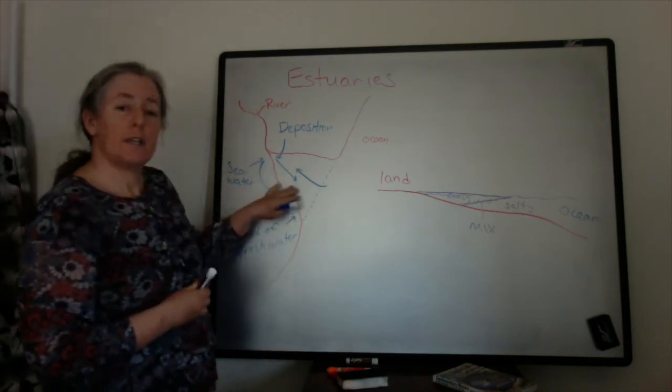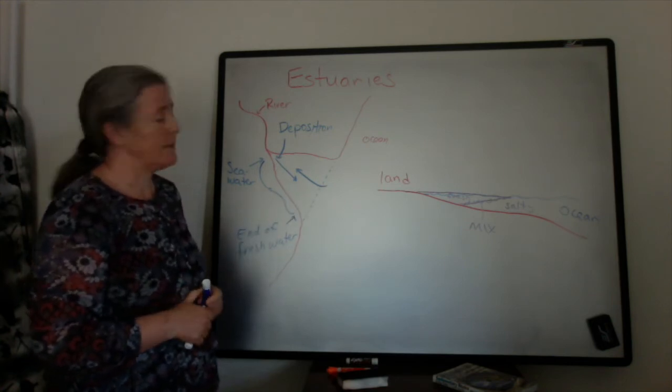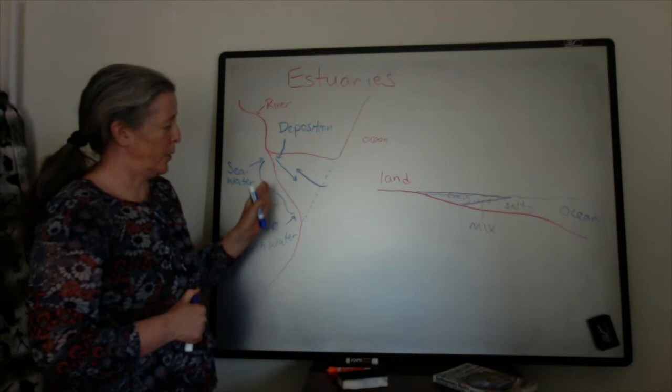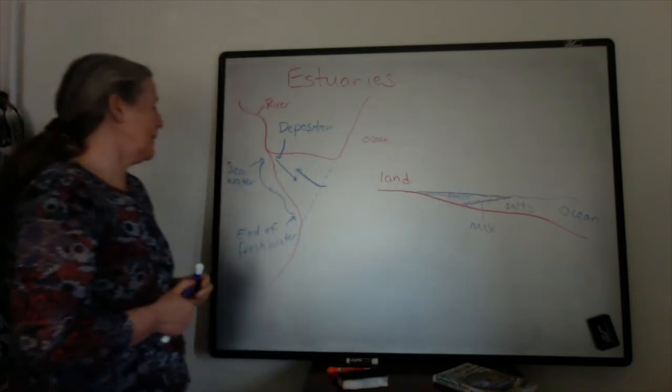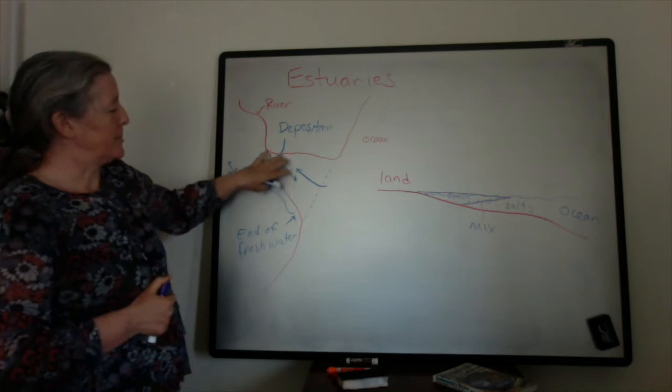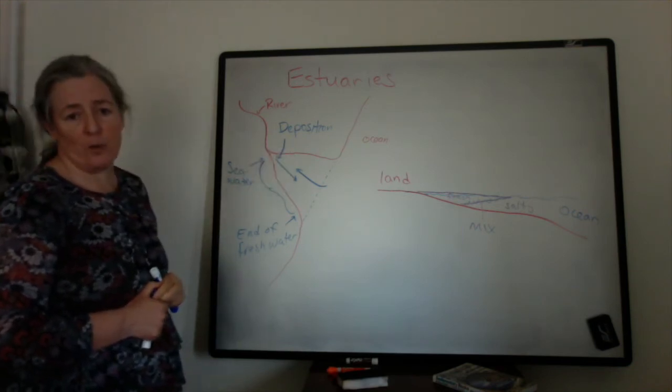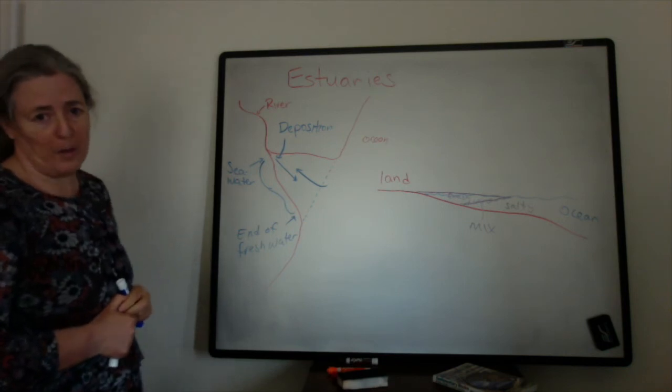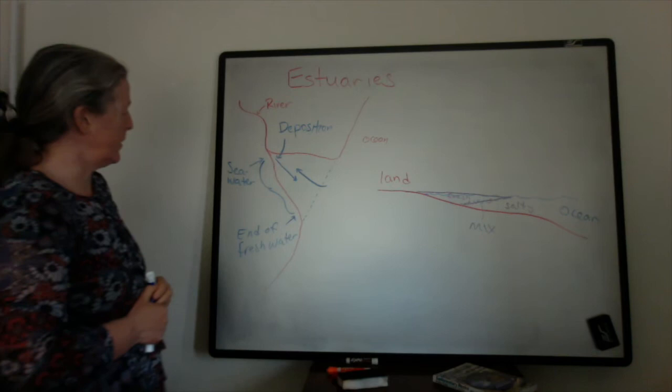Organisms that live in estuaries have to be able to withstand those big changes in salinity that are associated with changes in this boundary and the mixing. A lot of times estuaries are ecologically very interesting places with organisms that have adapted to this really dramatic change in water chemistry.